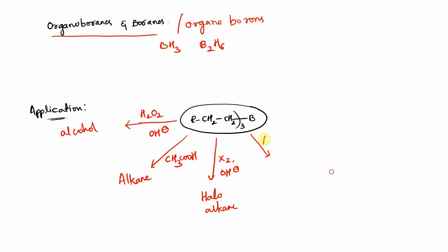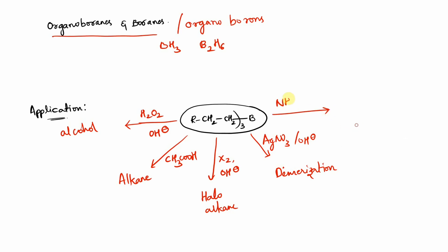Next, if you use AgNO3 — silver nitrate — in the presence of basic conditions, we will obtain dimerization of alkane. And the last application of organoborines is when you treat organoborines with NH4OH in the presence of NaOCl — sodium hypochlorite — which will prepare amines across the double bonds.